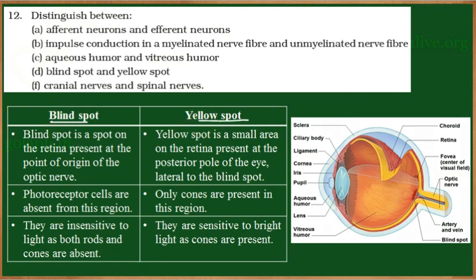Next, the blind spot and the yellow spot, both found on the retina. The blind spot is present at the point of origin of the optic nerve. At the blind spot, photoreceptors are completely absent, making this region insensitive to light, so no visual formation takes place here. Both rod and cone cells are absent at the blind spot.